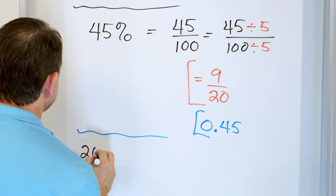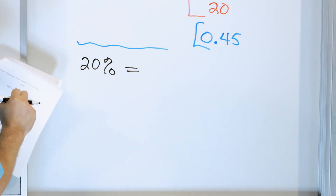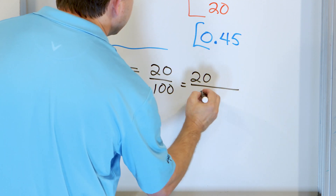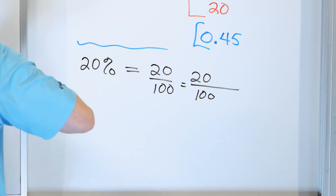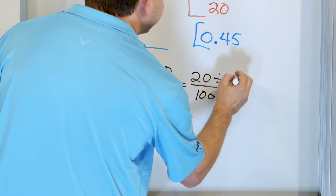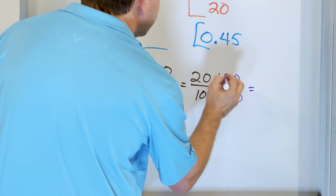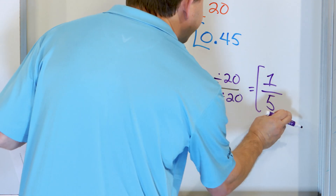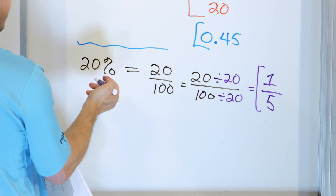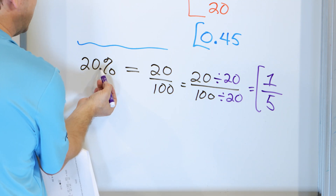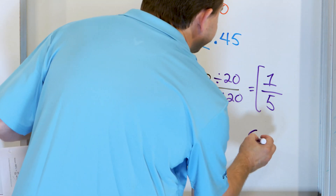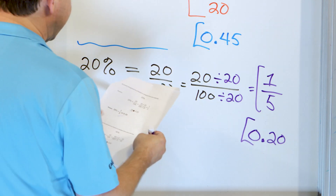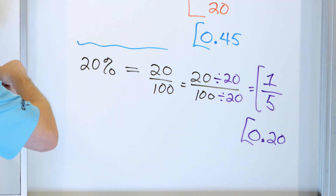Let's look at 20%. As a fraction: 20 over 100. We simplify by dividing by 20. 20 divided by 20 is 1, and 100 divided by 20 is 5, giving 1 fifth. For the decimal: there's an invisible decimal at the end of 20, and we move it two spots to the left — giving 0.2, or 0.20 since trailing zeros don't change the value. So 20% equals 1 fifth equals 0.20.